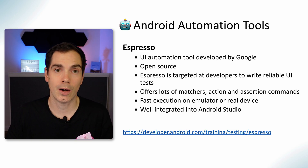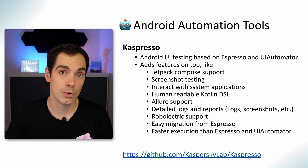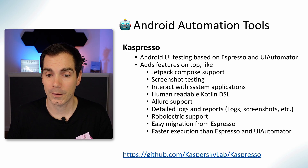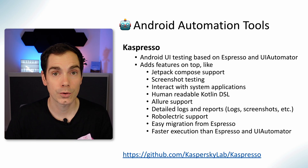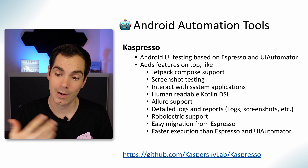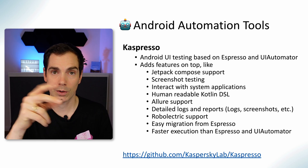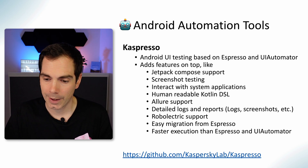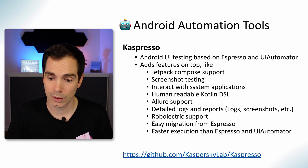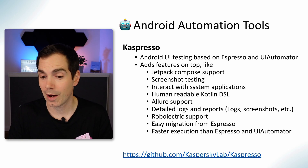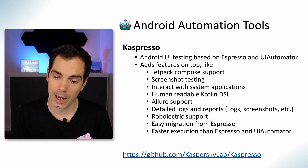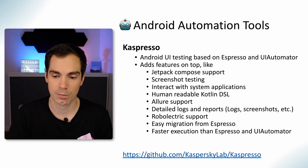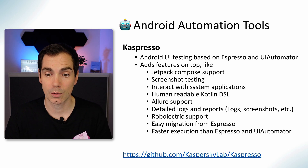A new tool on the block that I didn't mention two years ago is Kaspresso — an Android UI testing framework based on Espresso and UI Automator. It adds features on top: Jetpack Compose support, screenshot testing, the ability to interact with system applications like settings, a human-readable Kotlin DSL, built-in reporting with detailed logs and screenshots, Robolectric support, and it's easy to migrate existing Espresso tests to Kaspresso. Check the link in the video description.